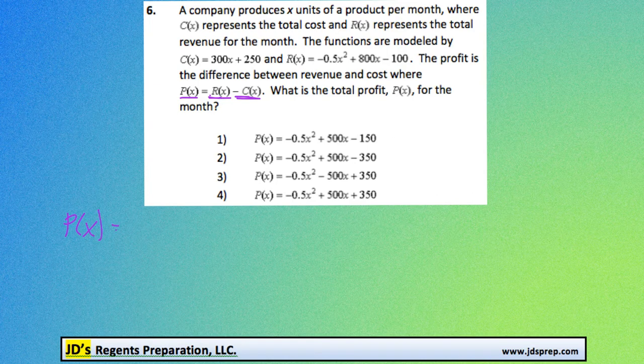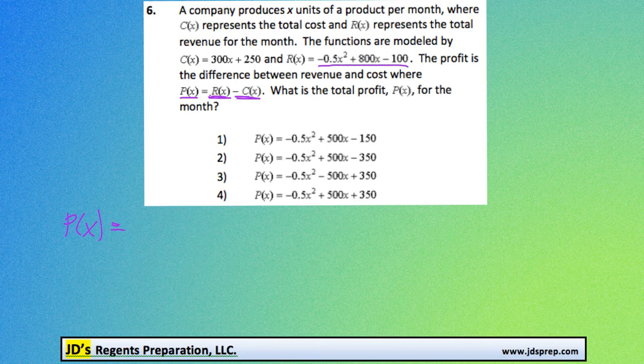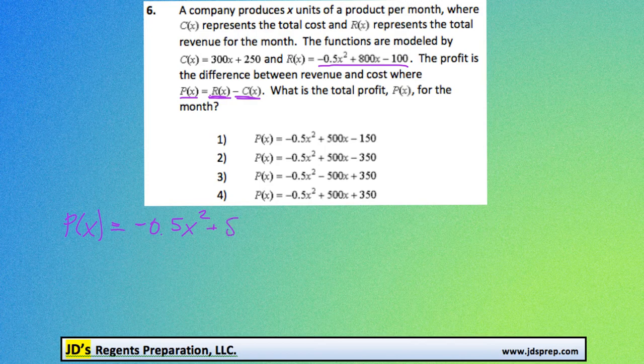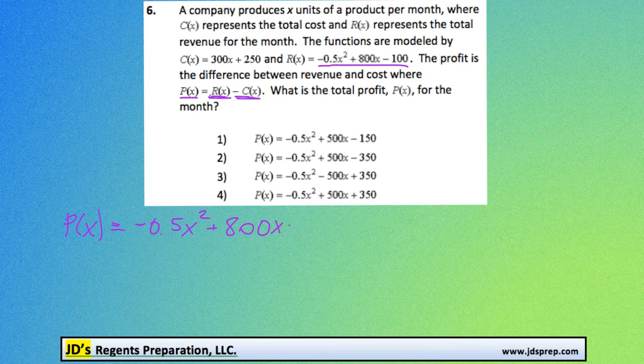So the profit is going to be P(x), and that's equal to R(x), which is negative 0.5x squared plus 800x minus 100.